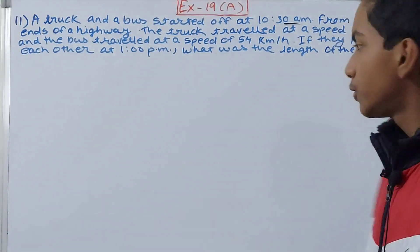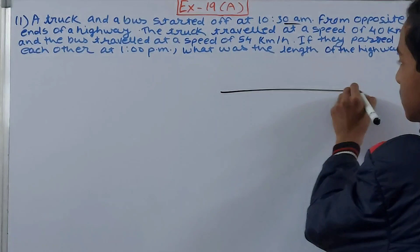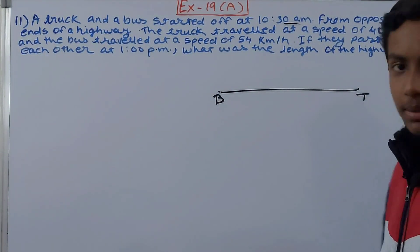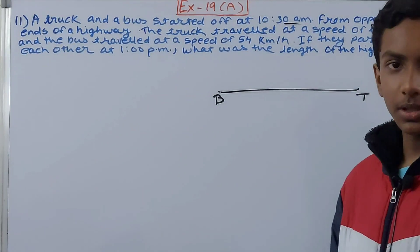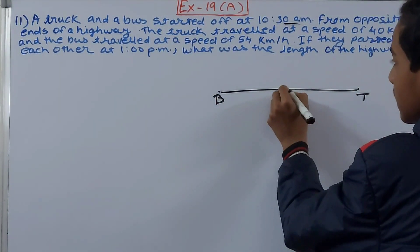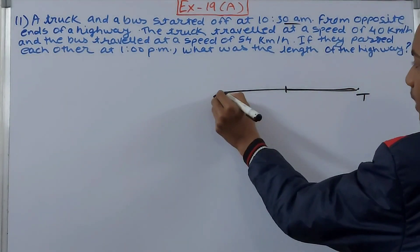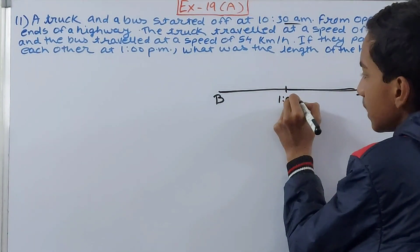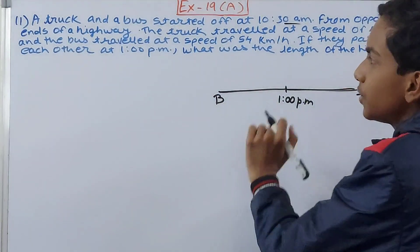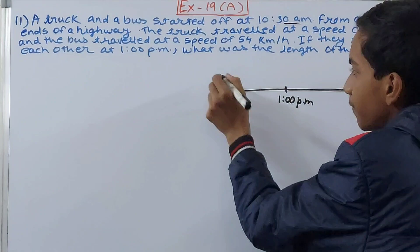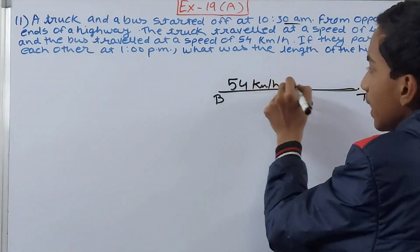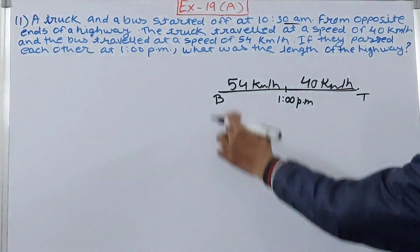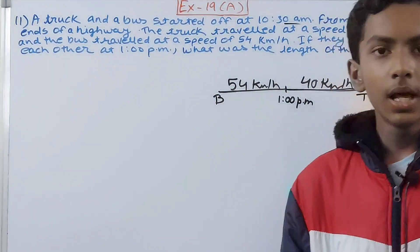We need to find the length of the highway. Understand it like this: if this is the highway, the bus starts from one end and the truck starts from the other end. Both of them start from opposite ends at the same time, that is 10:30 a.m. They travel towards each other and meet at a point — that is where they pass at 1 p.m.